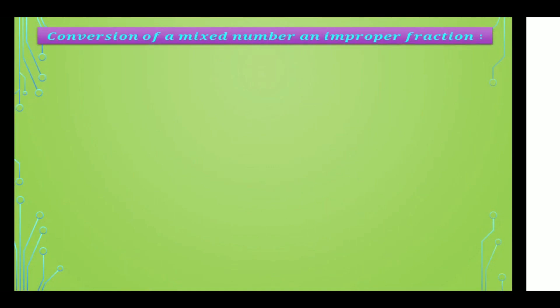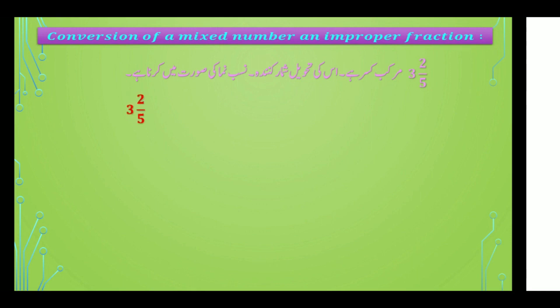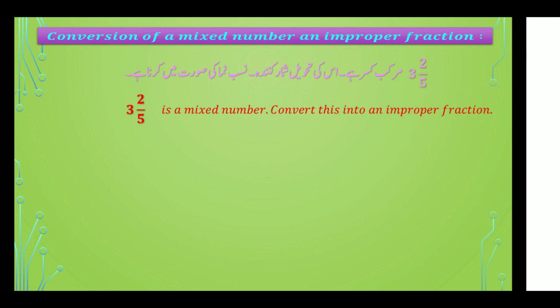اب ہم بات کریں گے conversion of a mixed number into improper fraction — یعنی مرقب قصر کی غیر واجب قصر میں تحویل۔ Example: تین عدد صحیح دو بٹے پانچ مرقب قصر کی تحویل شمار کرندہ نصف نماز کی صورت میں کرنا ہے۔